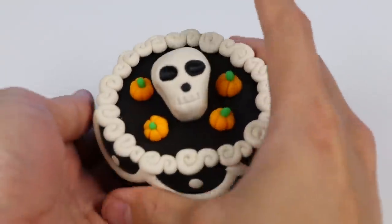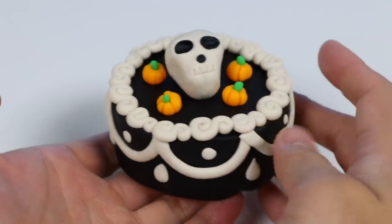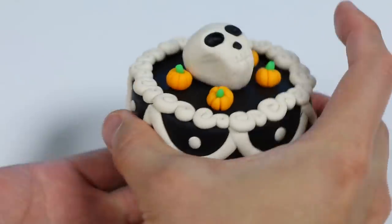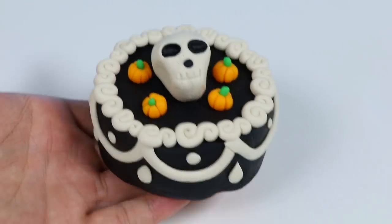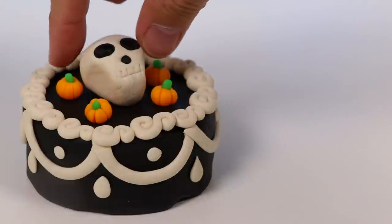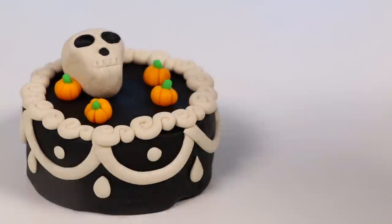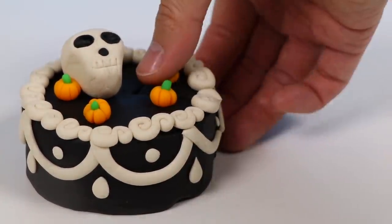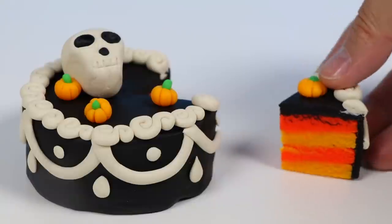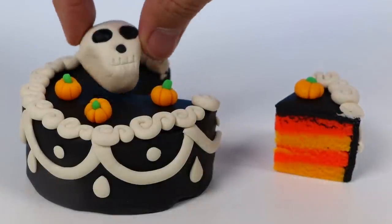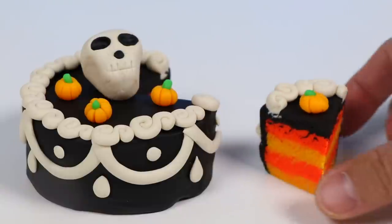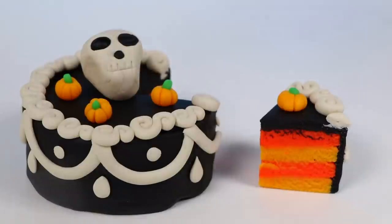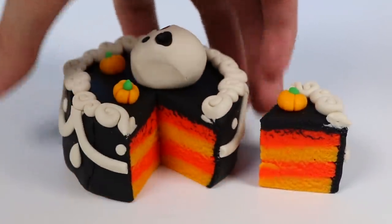All right. This is definitely one of the cooler cakes we made. Here's a closer look. Now let's cut out a slice. And if you're following along, this is why I recommended using different shades of orange. Look how beautiful this cake slice looks. Here's a closer look. And you can also show off the whole cake like this too. It looks pretty good, don't you think?